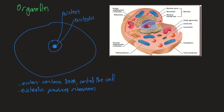The next organelle is the mitochondria. A mitochondrion looks like a sausage and has a highly folded internal membrane, which increases surface area. It is across that membrane that cellular respiration occurs. A single mitochondria is called a mitochondrion, and its job is to be the site of cellular respiration.